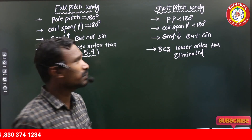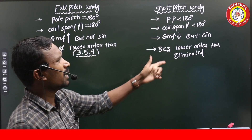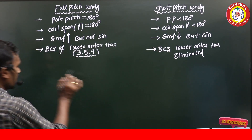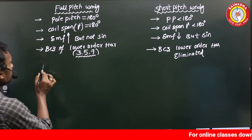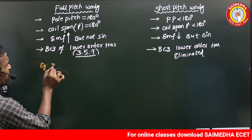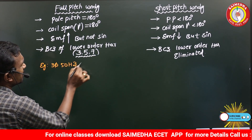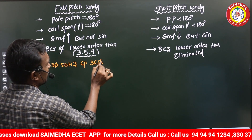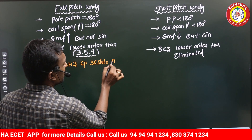To eliminate the lower order harmonics using short pitch winding and obtain sinusoidal EMF, let's take a simple example: a three-phase, 50 Hz, six-pole, thirty-six slot alternator.